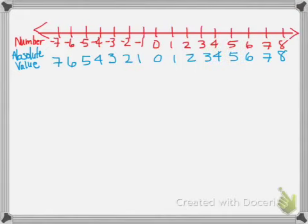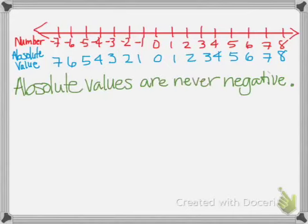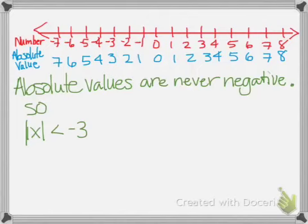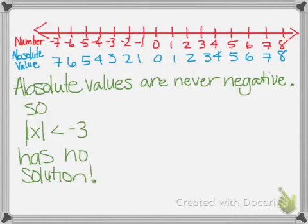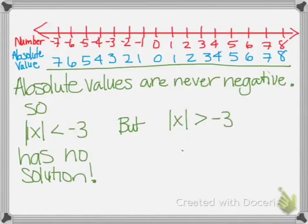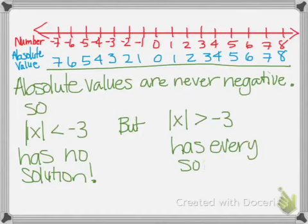Going back to the idea of absolute value: absolute values are never negative. So if you have the absolute value less than negative 3, look at the blue numbers — there are none that are less than negative 3. This has no solution, because you will never have an absolute value less than a negative number. But if you have the absolute value of x greater than negative 3, every single one of those blue numbers is greater than negative 3, so the solution is all real numbers.